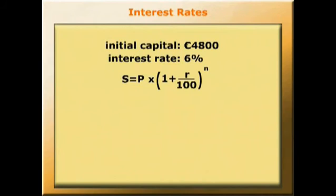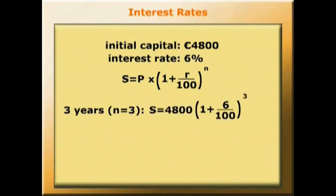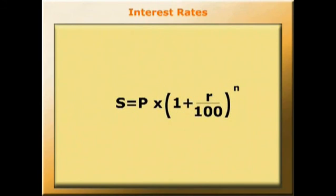For example, at 6% interest, the account after three years will contain S equals 4,800 times (1 plus 6 over 100) to the power of 3, which gives us 5,716 euros. So we've worked out the formula which enables us to find out, for any given sum of money, what will be in the account in some future time period, given that we know the interest rate.